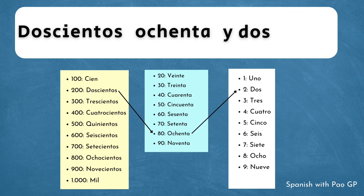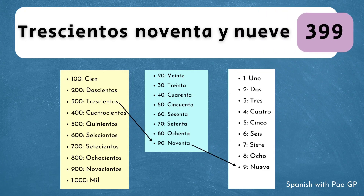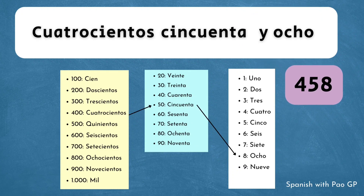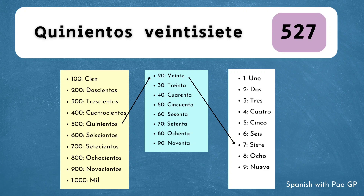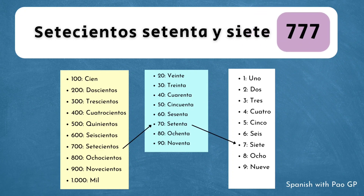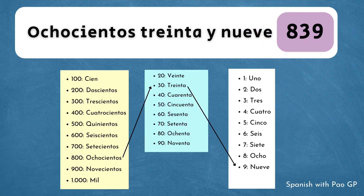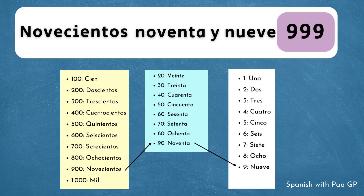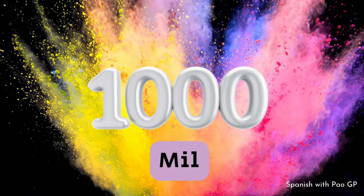Es decir: doscientos ochenta y dos, trescientos noventa y nueve, trescientos setenta, cuatrocientos cincuenta y ocho, quinientos veintisiete — recuerda que el veintisiete, como te expliqué, tiene una estructura un poco diferente — seiscientos cuarenta y tres, setecientos setenta y siete, ochocientos treinta y nueve, novecientos cincuenta y dos, o novecientos noventa y nueve. Hemos llegado al número mil.